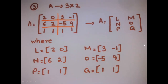For the 3×2 variation, the column partition line remains the same, but now two horizontal lines are drawn. This yields six sub-matrices: L=[2,0], B=[1,1] (top pair), N=[6,2], M=[3,-1] (middle pair), and O=[-5,9], Q=[1,1] (bottom pair), giving a 3×2 partitioned matrix A.